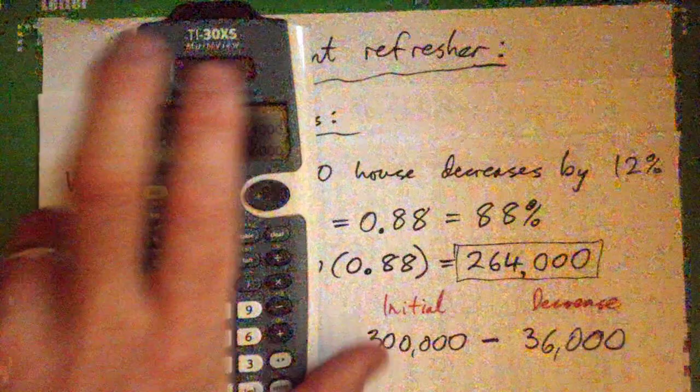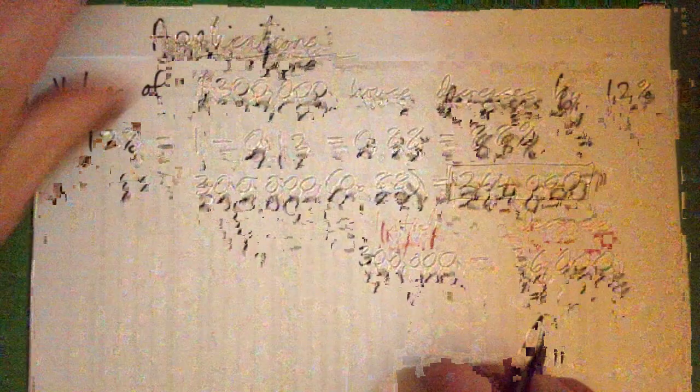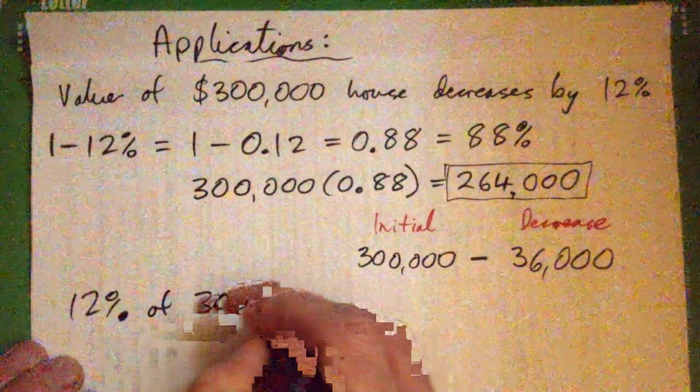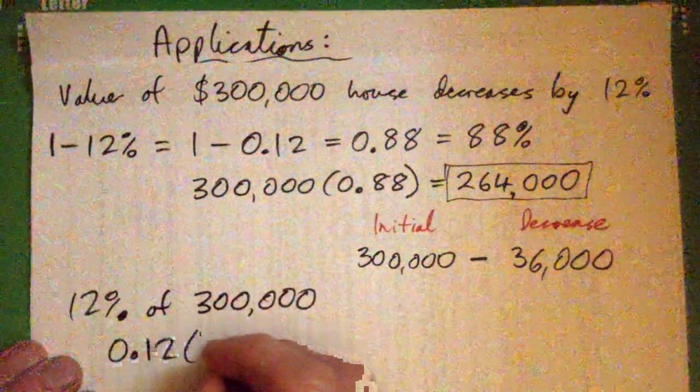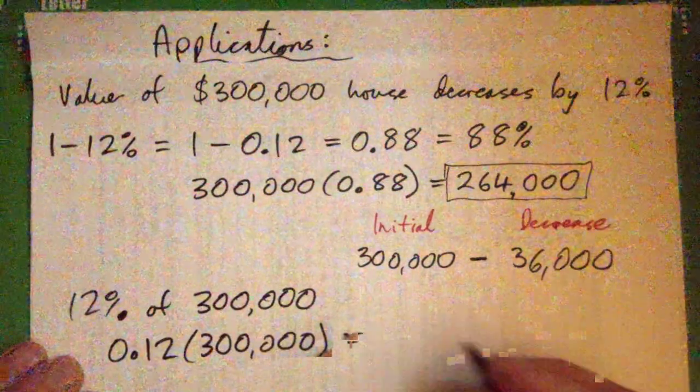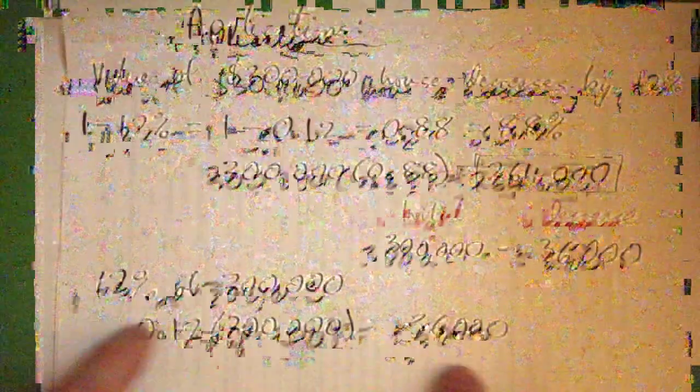We never figured that out because the long way of that is... And we should understand both ways. But we could have done this. We could have done 12% of 300,000, is 0.12 times 300,000. Which is 36,000, right?